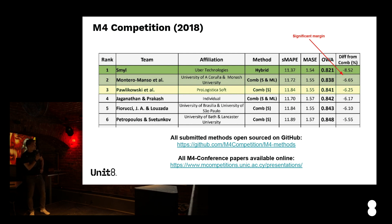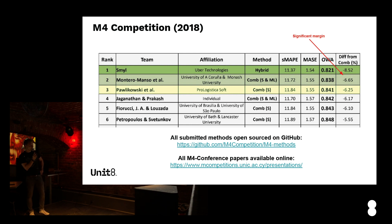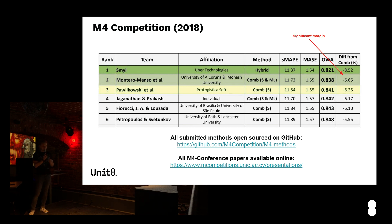Looking at the top six solutions, five are different combinations of statistical and machine learning methods, combined and averaged together. Their results are quite comparable. Surprisingly, the first solution from Uber had a significant margin over the second-place solution. All methods were open source, and an M4 conference was organized where the top five solutions were presented with in-depth explanations of those methods.